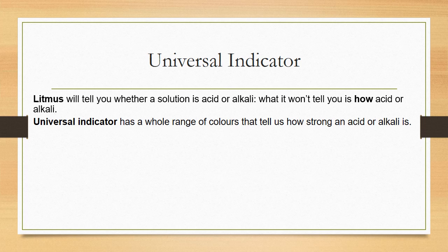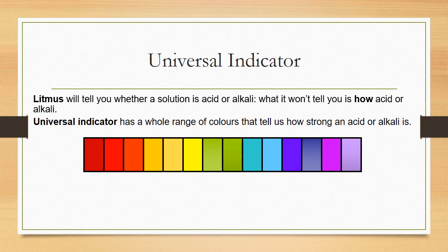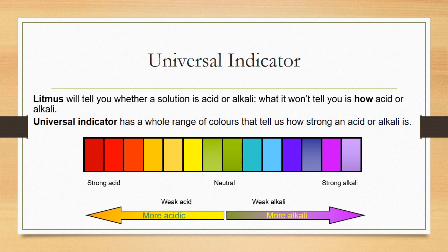Universal indicator has a whole range of different colours to determine the general pH. You have a range from dark red all the way to lilac. A strong acid is in the red area, and a strong alkali is in the purple/lilac area. The more acidic, the colour goes from green down to red; the more alkaline, it goes from green up to lilac.